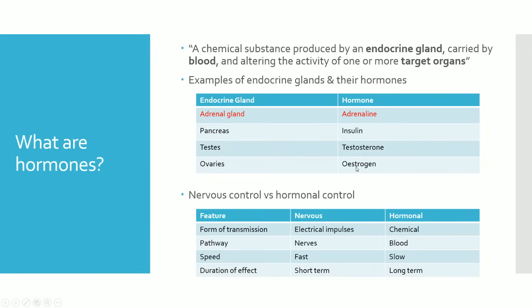For example, oestrogen also has a role in the menstrual cycle, but we'll talk about that later when we go through the topic of reproduction. The pancreas secreting insulin will be looked at in this video, and it has a role in regulating blood glucose in our bodies.